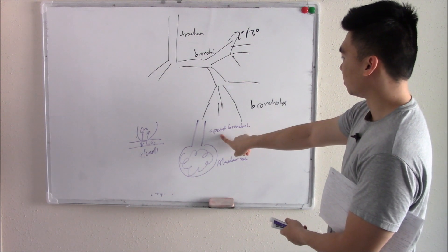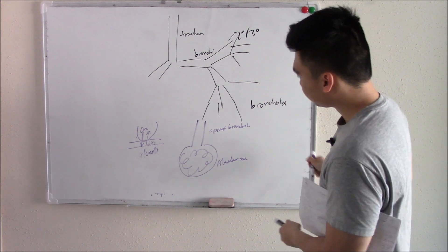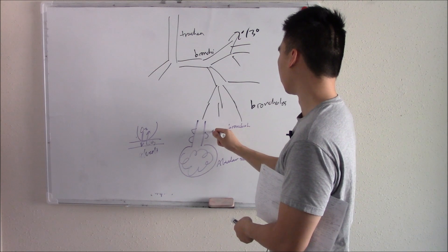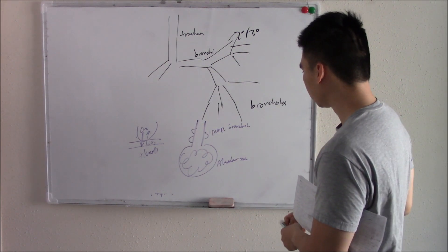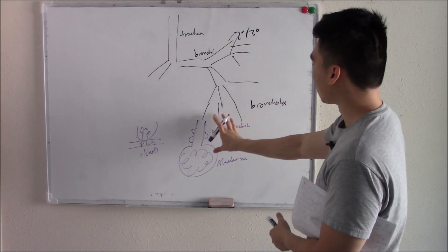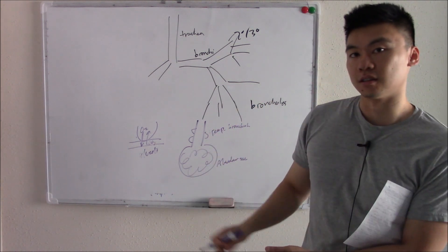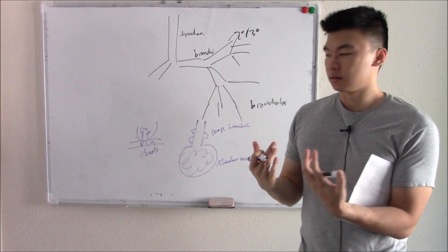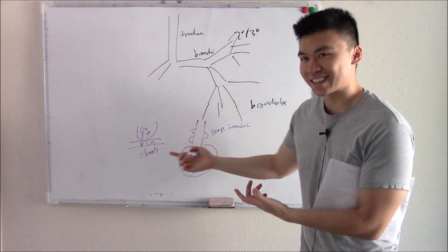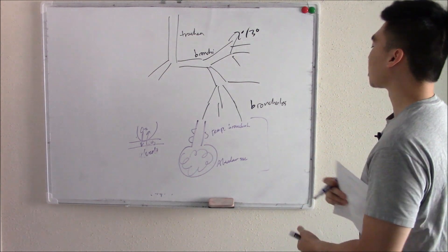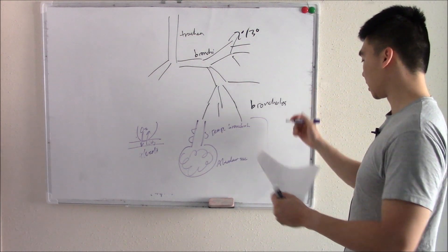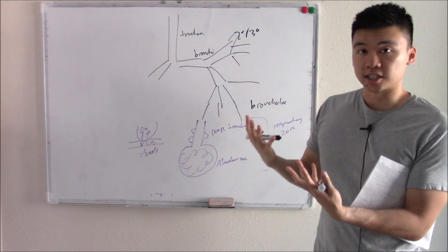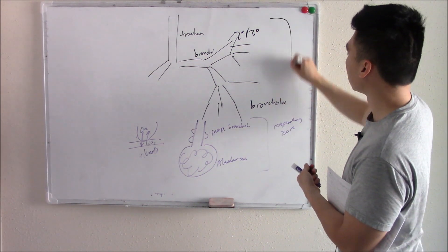What makes this bronchiole special? It has a few alveoli on the wall — so we call these respiratory bronchioles. Your bronchioles branch into respiratory bronchioles, which eventually become your alveolar sac. The only portions of your lungs that can partake in gas exchange are things that have alveoli. This is called your respiratory zone.